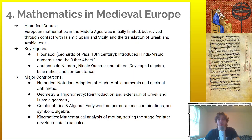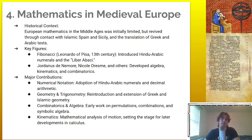Further European contributions include the reintroduction and extension of Greek and Islamic geometry, early work on permutations, combinations, and symbolic algebra, and kinematics — the mathematical analysis of motion — setting the stage for later developments in calculus.